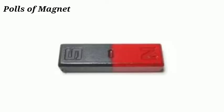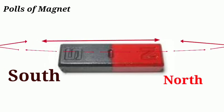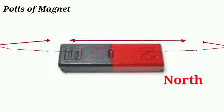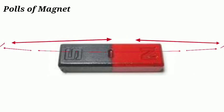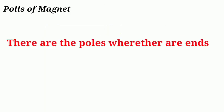The poles of a magnet are south and north, and which moves from south to north and north to south. So we can say there is a pole. In a bar magnet there is a pole, in a magnetic needle there is a pole, and in a horseshoe magnet there is a pole, while the ring magnet has no pole. So poles are at the ends.